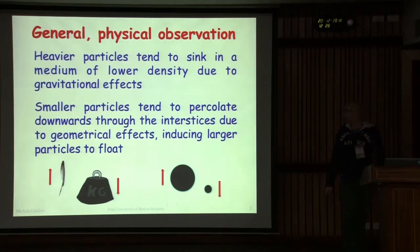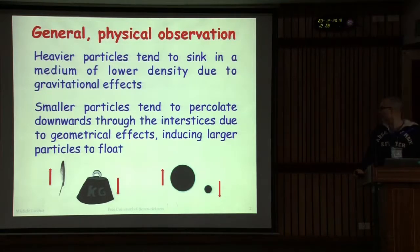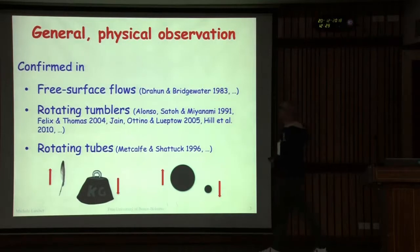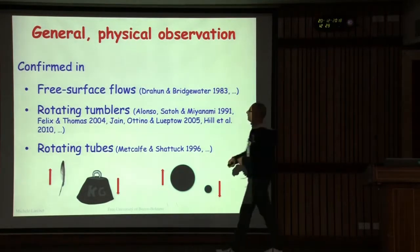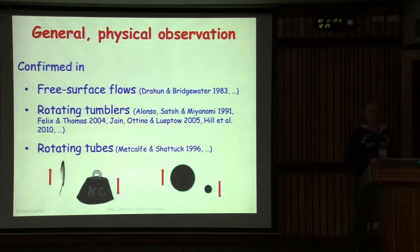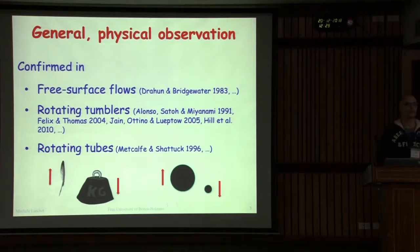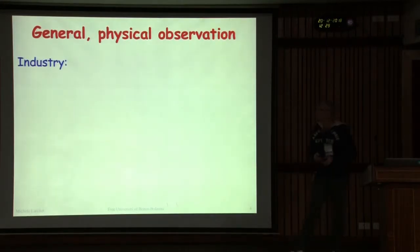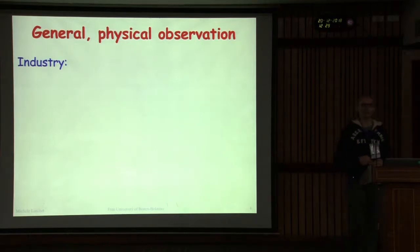We also had some explanation about this. We heard from Natalie, for example, the kinetic sieving mechanism, and there are other ways to explain these things. This kind of observation is common in different contexts: in free surface flows, in rotating tumblers, in rotating tubes, and many other configurations. Segregation has important implications both in industry and in geophysical flows.